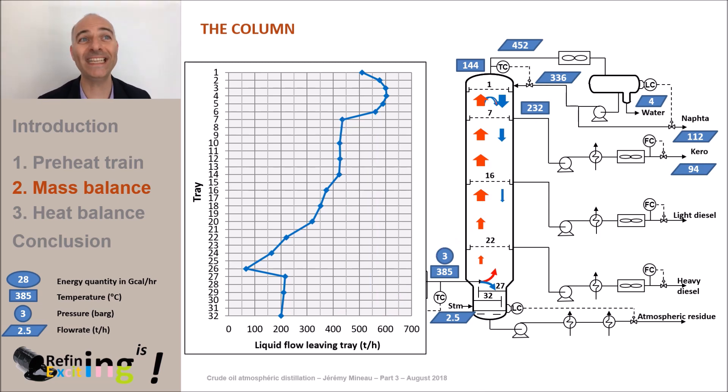At tray 16, light diesel is withdrawn from the tower. If we aim for a cut point of 300 degrees C between light diesel and heavy diesel, this implies to withdraw 37 tons per hour of light diesel. And we clearly see the drop of liquid flow by 37 tons per hour on the draw tray. The light diesel withdrawal temperature is 300 degrees C. We will speak more in details about this temperature in the next videos.